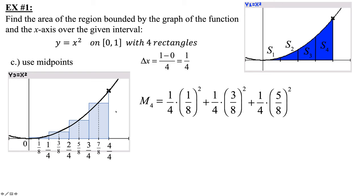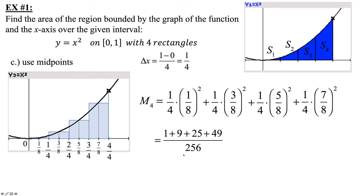This is how we use the midpoint technique for Riemann sums. Crunching the numbers: eight squared is 64 times 4 is 256. We have one squared is 1, plus three squared is 9, plus five squared is 25, plus seven squared is 49. Adding that all up gives 84 over 256, which reduces to 21 over 64.